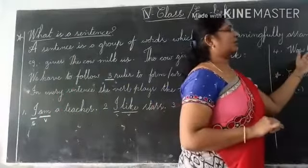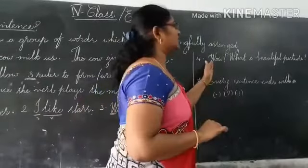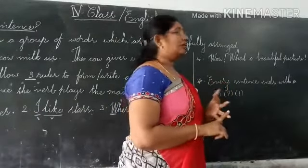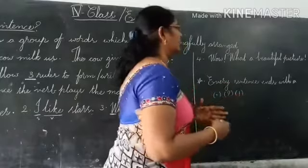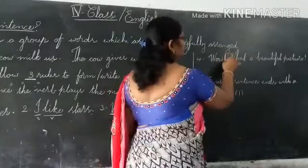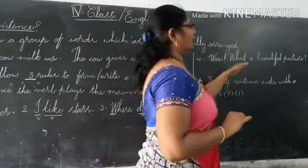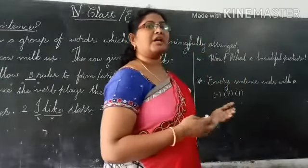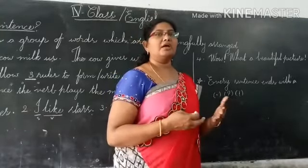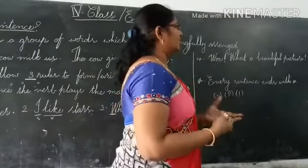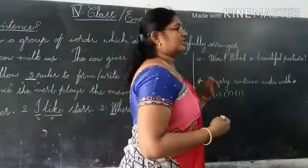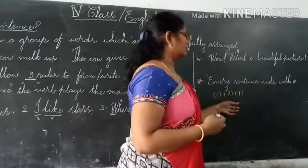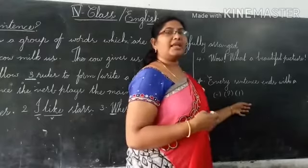See the fourth sentence: 'Wow, what a beautiful picture!' Here we are expressing our feelings — our joy, happiness, surprise, our inner feelings. We are going to express these with an exclamation mark. One main point: every sentence ends with a full stop, question mark, or exclamation mark.